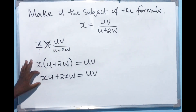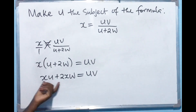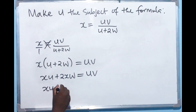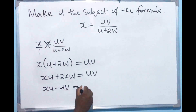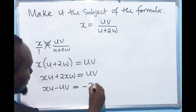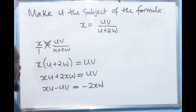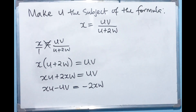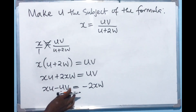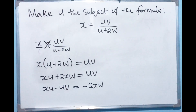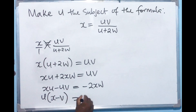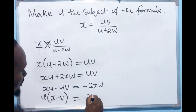Now we are interested in the terms that have got u. We know that this term and this term both have u. We can bring them together: xu minus uv equals minus 2xw. Then here we can factor out u, because it is common — we have u in both terms. So u outside gives us u times (x minus v), and that equals minus 2xw.